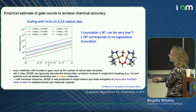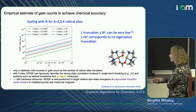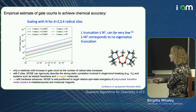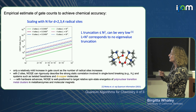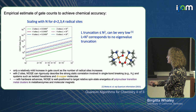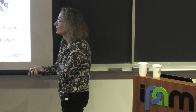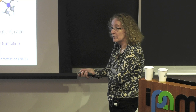With just two sites, we can describe the strong static correlation involved in breaking any single bond. We expect this is relevant to systems like twisted multiple-bond systems, such as a Dicopper molecule. The non-orthogonal approach, combined with the ease of quantum circuits in evaluating off-diagonal matrix elements, is well positioned — as noise improves — to target spin-state energetics of polynuclear transition metal clusters in metalloenzymes and molecular magnets.